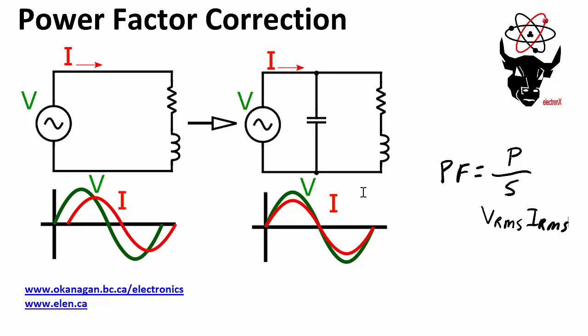There are actually two parts to power factor. The first part is called the displacement power factor. That displacement power factor is due to reactive loads like an inductor in the circuit, and that inductor is going to displace the current with respect to the voltage. The current is going to be out of phase with the voltage.